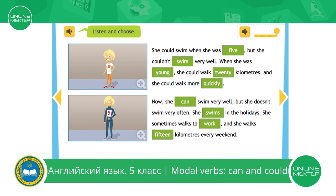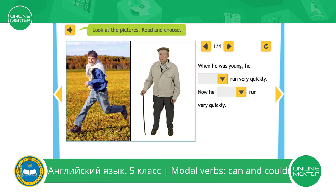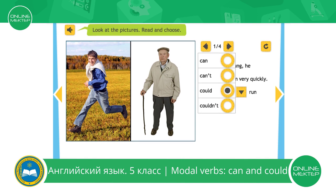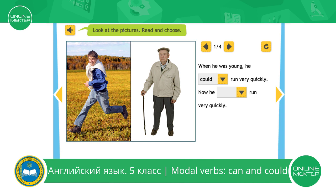We use modal verb can to express the possibility in the present tense. Listen to the instructions carefully, please. Look at the pictures. Read and choose. You need to complete these two sentences with the best answer. Look at these two pictures. Let's do the first sentence. When he was young, he ran very quickly. Can, can't, could, couldn't. When he was young, he could run very quickly.